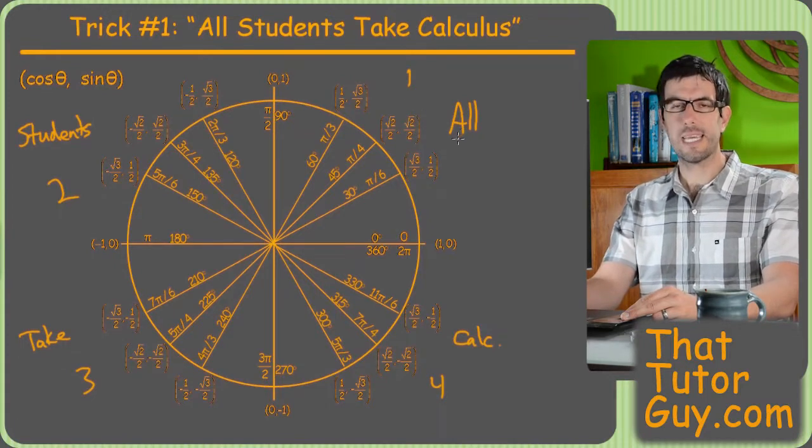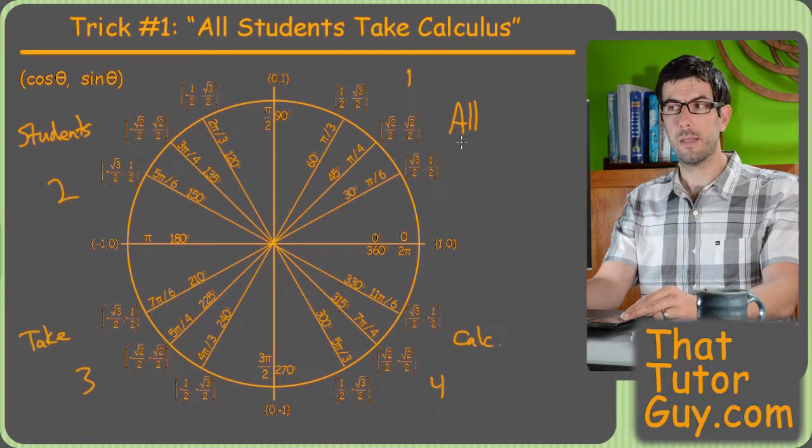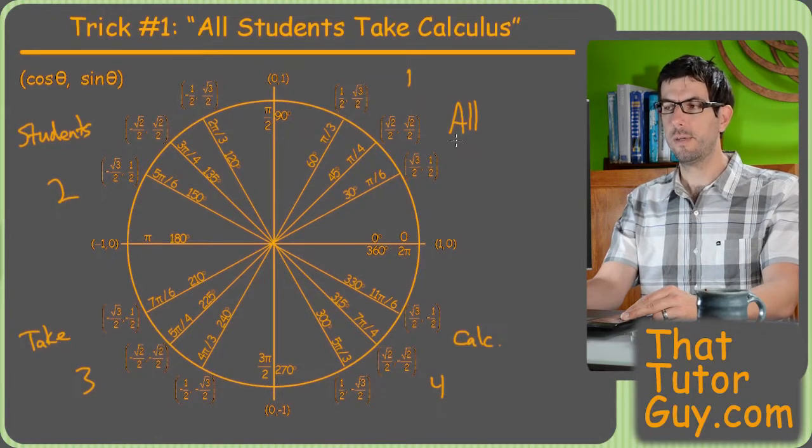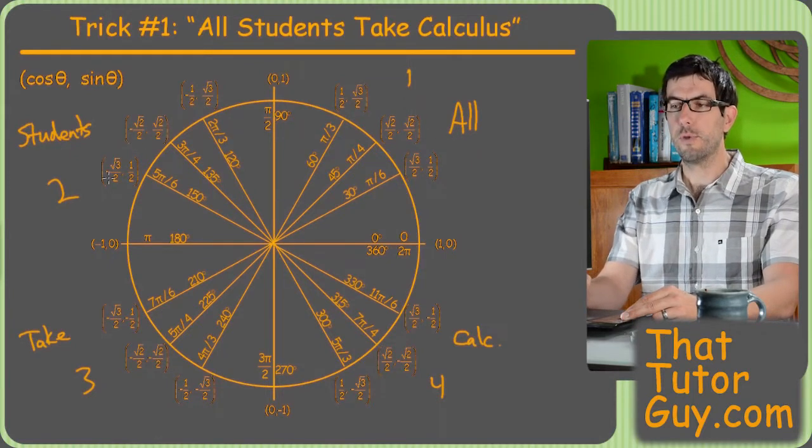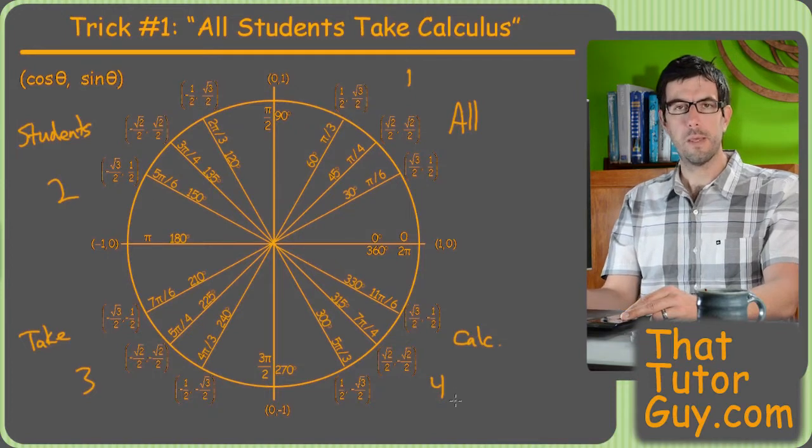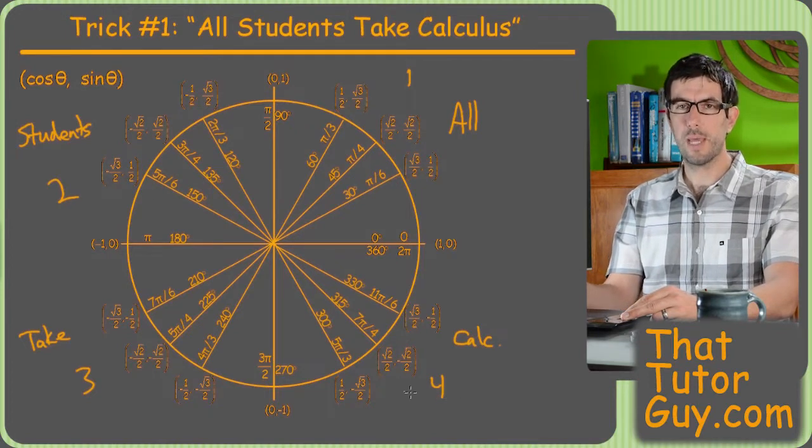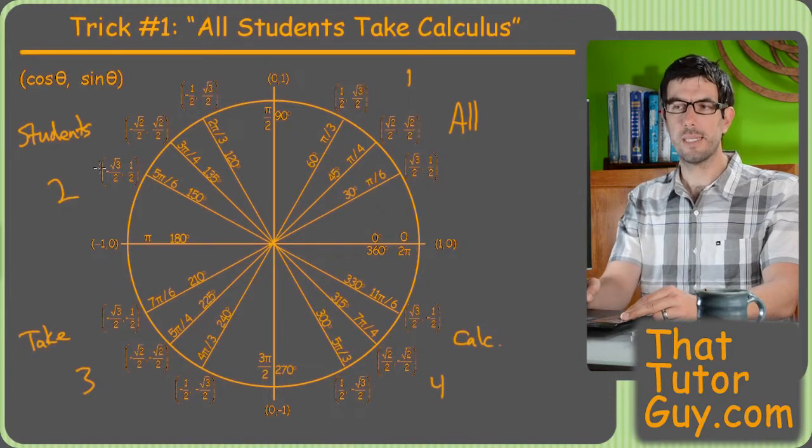So all students take calculus tells you which one of the trig functions are positive. What happens is that in most of the quadrants, 2, 3, and 4, most things are negative. So you'll have two negatives and one positive out of sine, cosine, and tangent.